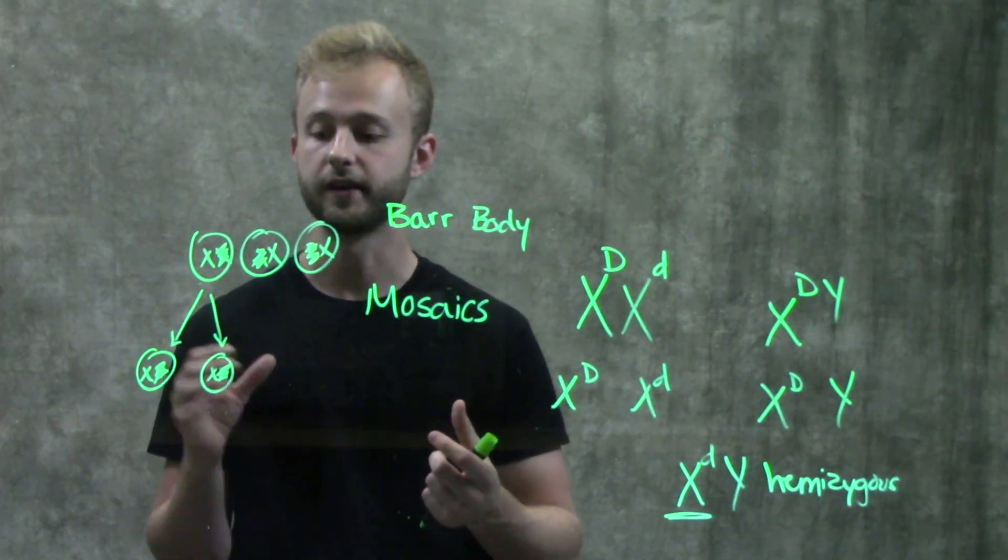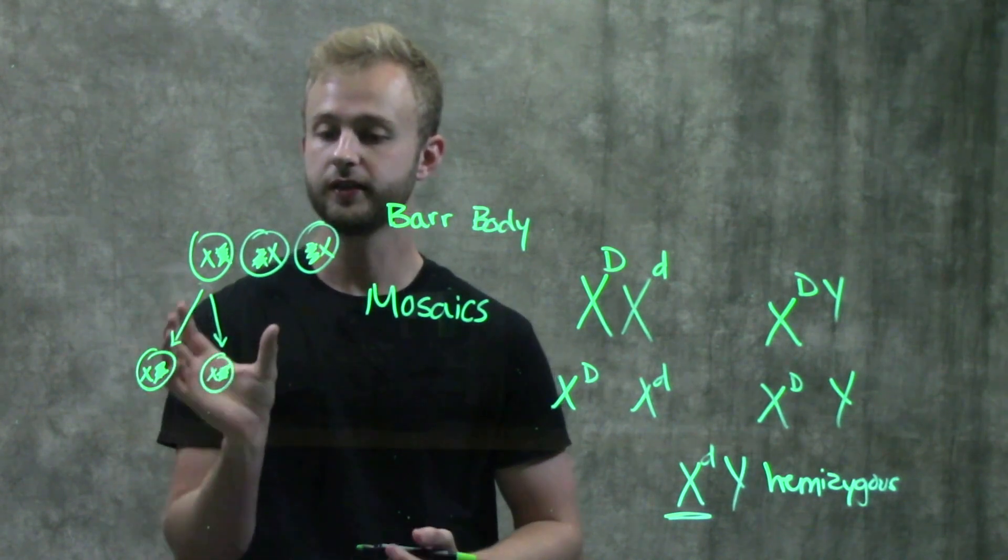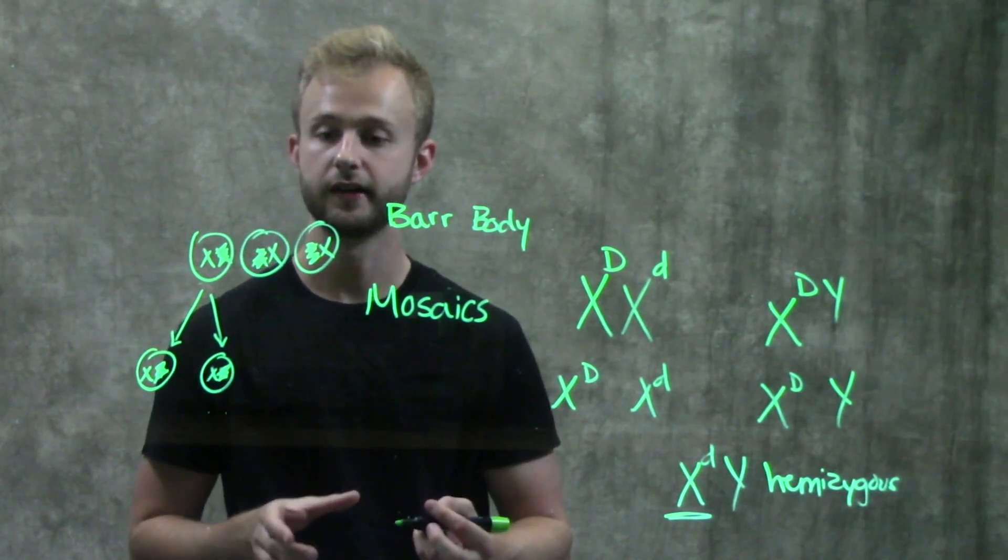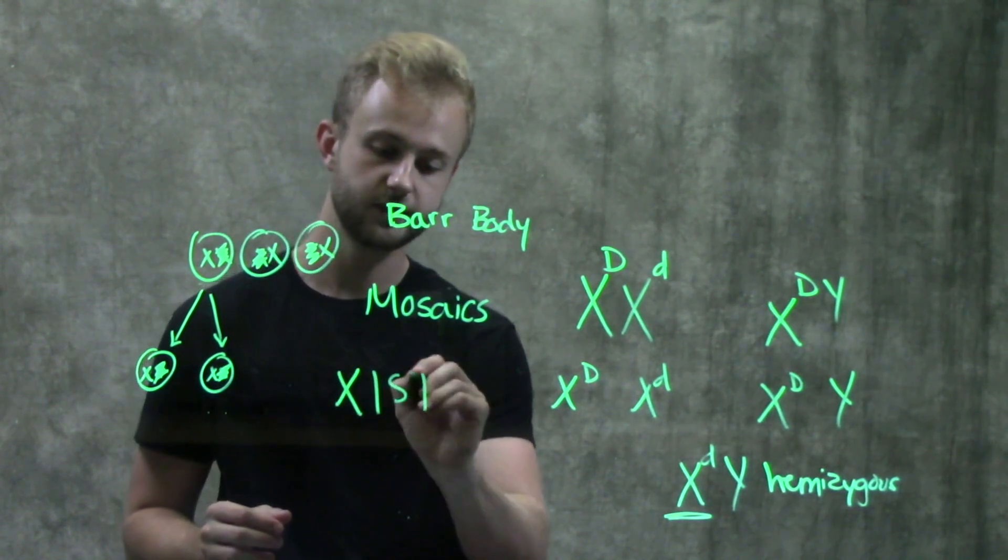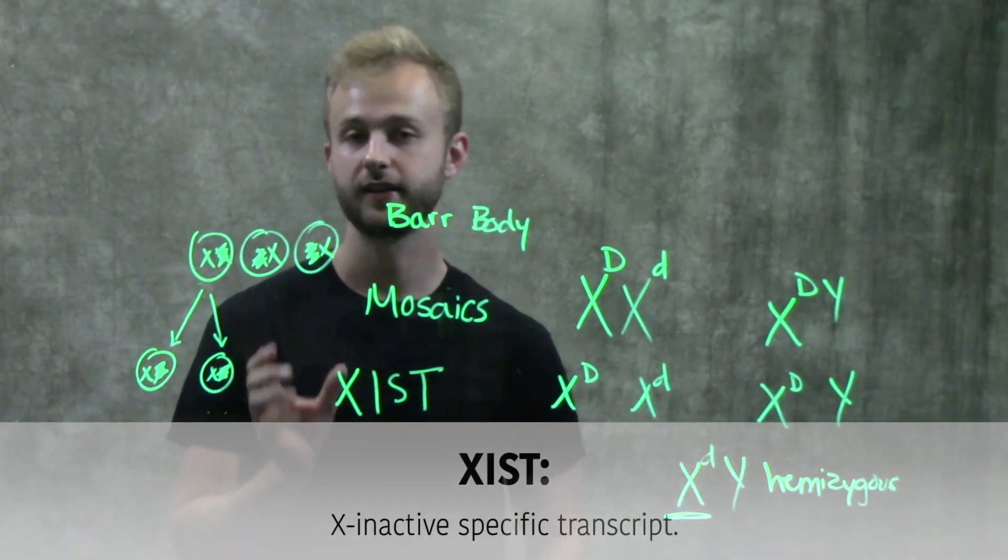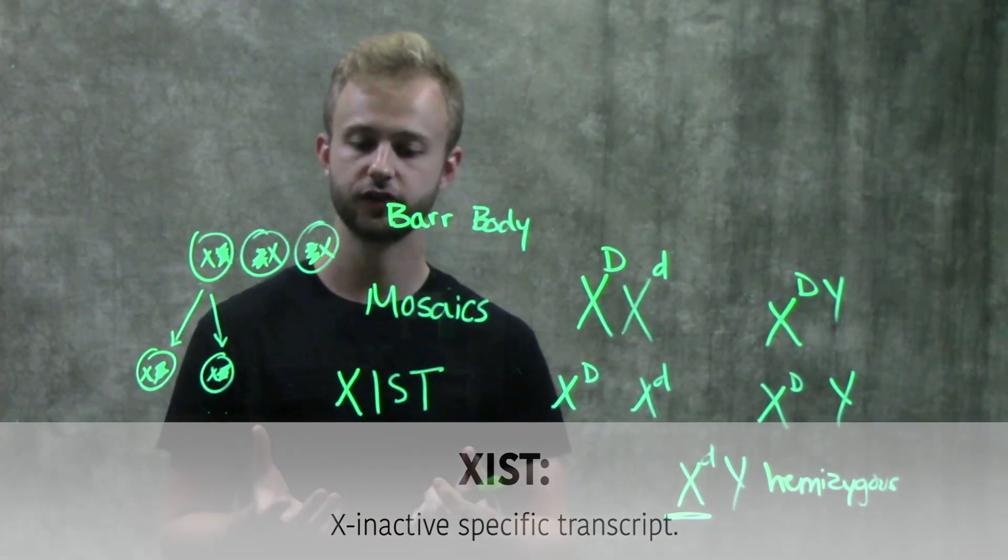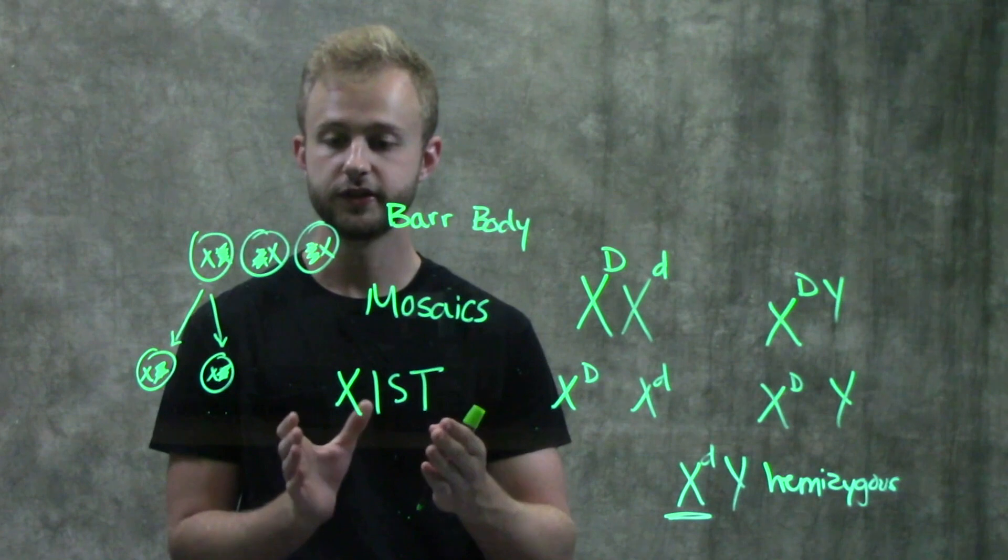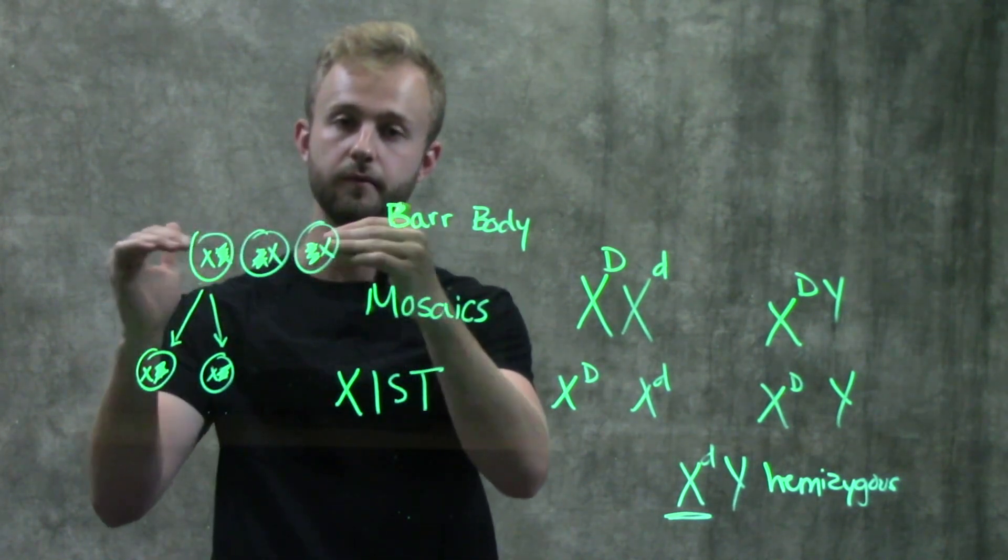So mosaicism is directly related to X inactivation. So how these X chromosomes actually get inactivated. So there's a region on the X chromosomes called the XIST region, which stands for the X inactive specific transcript. And so those regions on these two X chromosomes are going to interact with each other early on in embryonic development.